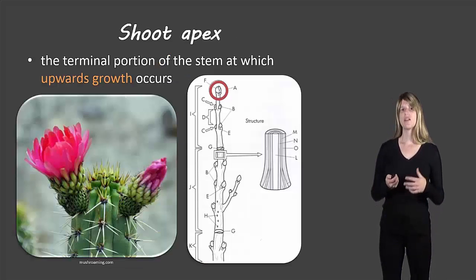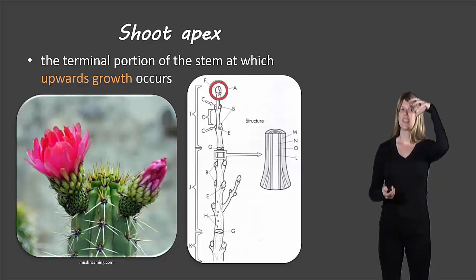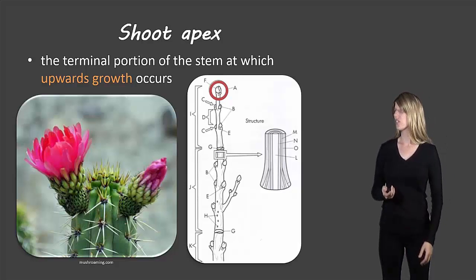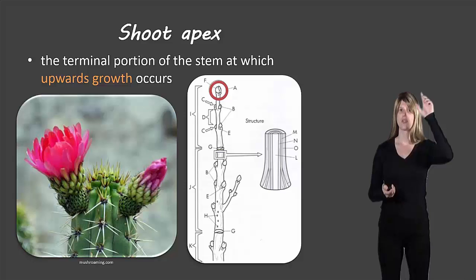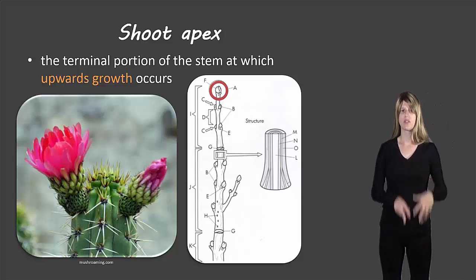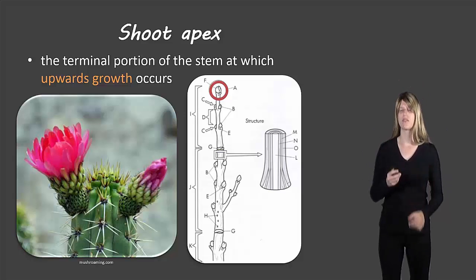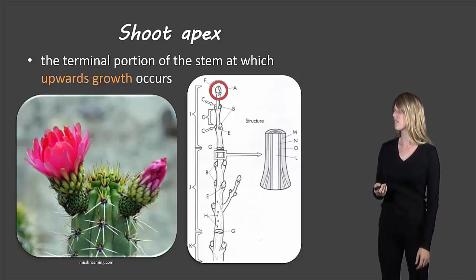The next part is the shoot apex, and this is the terminal or the end portion of the stem where upward growth occurs. We know that in the roots that's where it grows down, and the shoot apex is where the plant grows upwards.